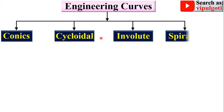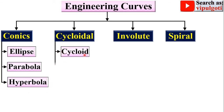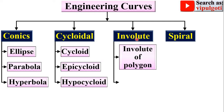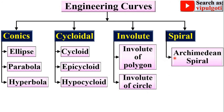The four groups are: conics, cycloidal, involute, and spiral. In conics there are three types: ellipse, parabola, and hyperbola. In cycloidal there are also three types: cycloid, epicycloid, and hypocycloid. In involute there are two types: involute of polygon and involute of circle. In spiral, the one type covered here is the Archimedean spiral.